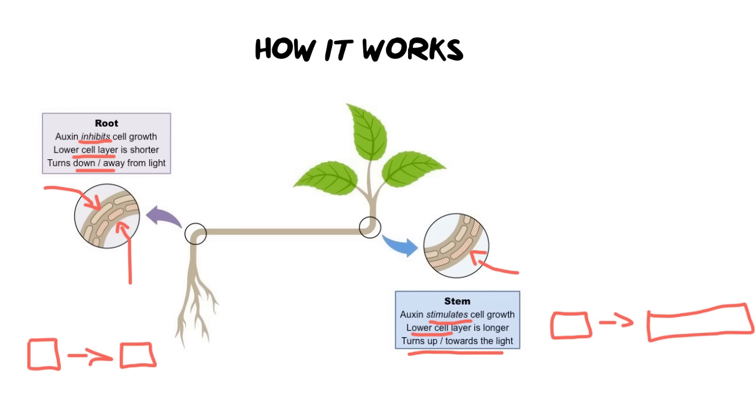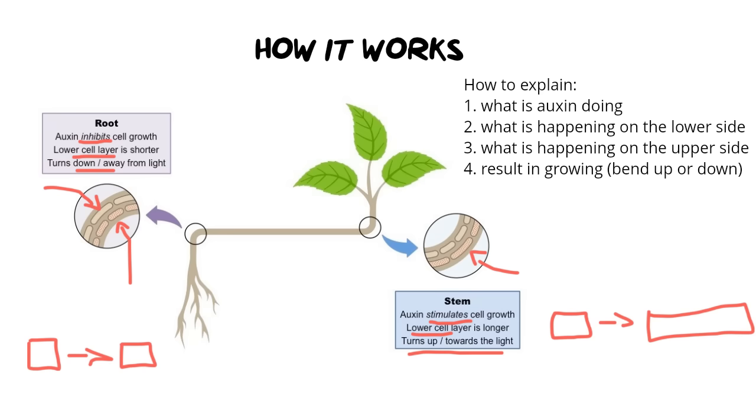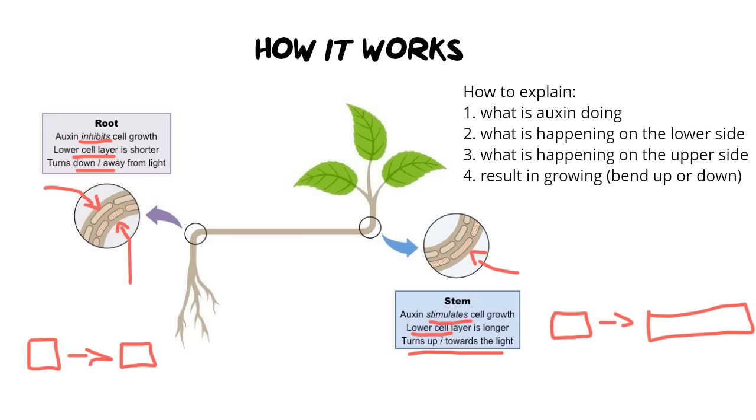A nice easy way to explain this and I've planned it out for you really easy of how you can explain this in an exam or test is you must mention four things. Okay so when you are explaining geotropism or for that matter phototropism you can use this as well. You need to explain the first thing is what is the auxin doing? Is it inhibiting or is it stimulating? Okay the second thing is what is happening on the lower side? In other words the lower side towards gravity? You could substitute that in for what happens on the dark side of the plant for phototropism and what happens on the light side.